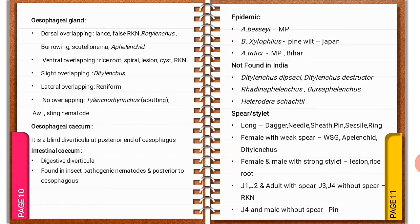Lateral overlapping is present in dreniform nematode. No overlapping, also known as abutting, is present in Tylenchorhynchus — this is a repeated exam question — as well as in owl nematode Deladenus and string nematode Belonolaimus. Regarding esophageal cecum: it is a blind diverticulum at the posterior end of the esophagus. Intestinal cecum is a digestive diverticulum present in entomophagous nematodes, posterior to the esophagus.